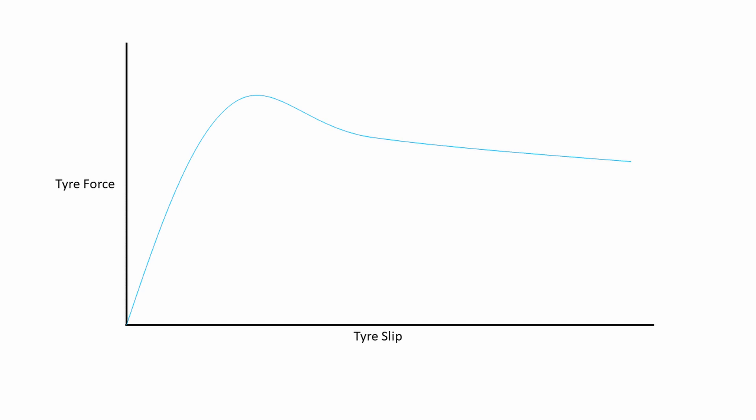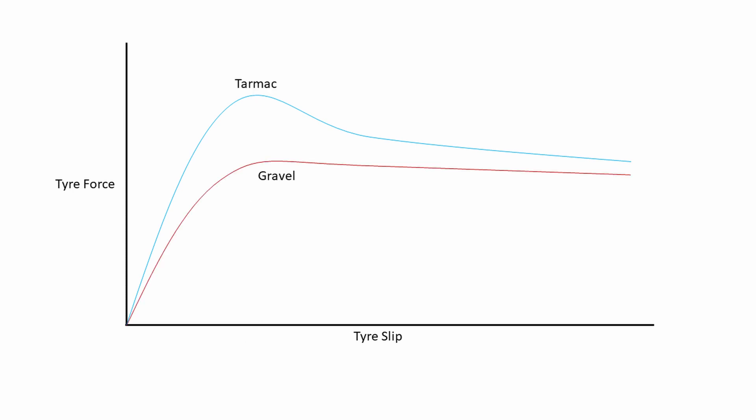This curve is pretty typical for tyres on tarmac - you can see we have a peak at about 20% and then the amount of force the tyre can develop drops off fairly significantly after that. On gravel or on any loose surface - soil or whatever - the situation is similar in that we still develop maximum force at about 20% tyre slip, but we don't see that very distinct drop immediately after the maximum force point. It's one of the reasons why vehicle handling on gravel tends to be a bit more predictable than it is on tarmac: when you start to slide, you don't suddenly get a big drop off in tyre force.